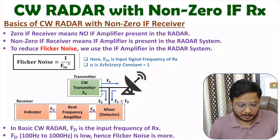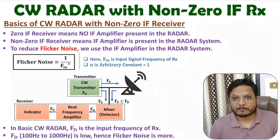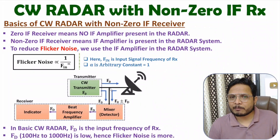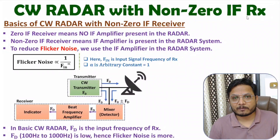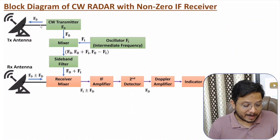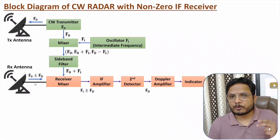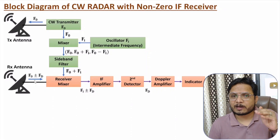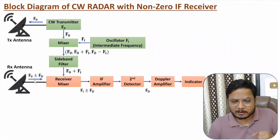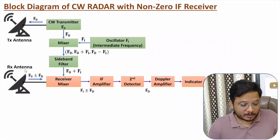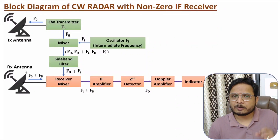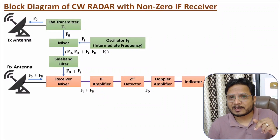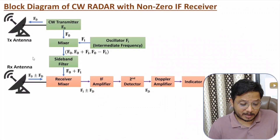So now we will be upgrading this continuous wave radar system with a non-zero IF receiver. The basic block diagram had higher flicker noise as well as isolation issues. In the upgraded block diagram of CW radar with non-zero IF receiver, we have two antennas — one for the transmitter and one for the receiver. Using two antennas provides excellent isolation between the transmitter and receiver. The transmitter works at very high power while the receiver receives a very weak signal, so isolation between them is essential. Two separate antennas provide ideal isolation between transmitter and receiver.